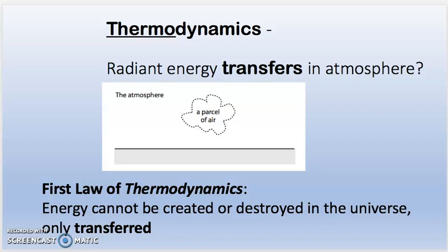And when we're talking about radiant energy from the sun, how do we transfer that in our thin atmosphere? How do we transfer that through the vacuum of space? Well, let's keep in mind what we do know about the first law of thermodynamics, in that energy cannot be created or destroyed in the universe, only transferred. How are we going to transfer it?